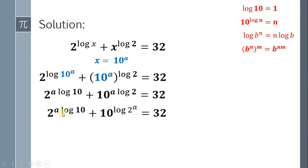We have 2 raised to a multiplied by 1 or simply 2 raised to a. Plus, in this term, we use the second identity says that 10 raised to logarithm of n equals n. It follows that 10 raised to logarithm of 2 raised to a must be equal to 2 raised to a. Bring down 32.